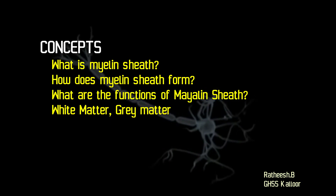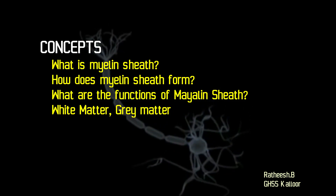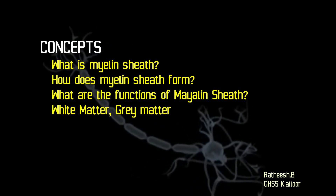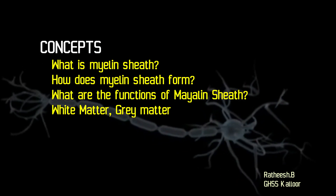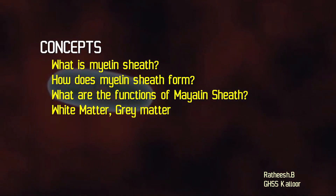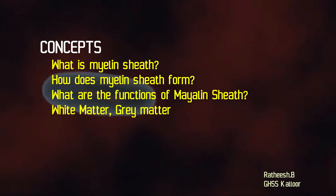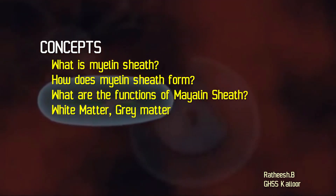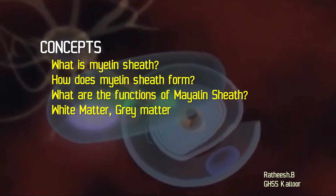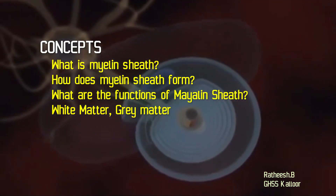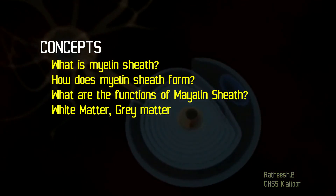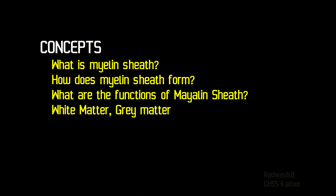The main concepts in this video are: what is myelin sheath, how does myelin sheath form, how many types of myelin sheath are there, what are the functions of myelin sheath, and what are white matter and gray matter. In the next part, we will analyze the generation and propagation of nerve impulses. Thank you.